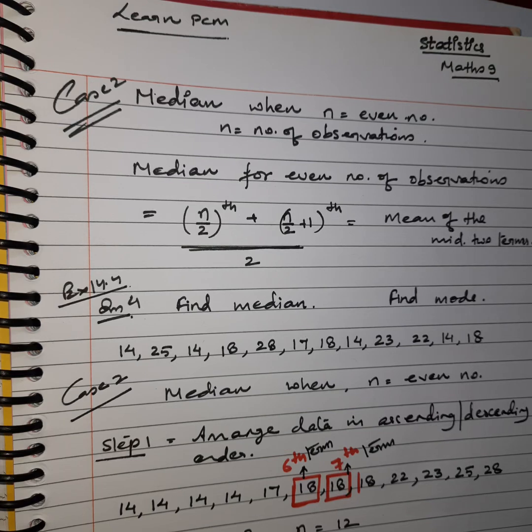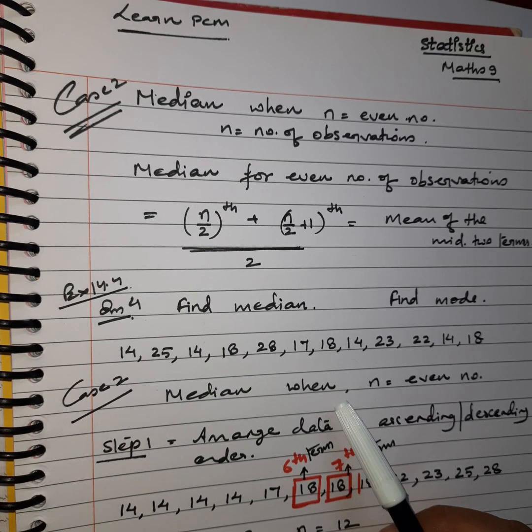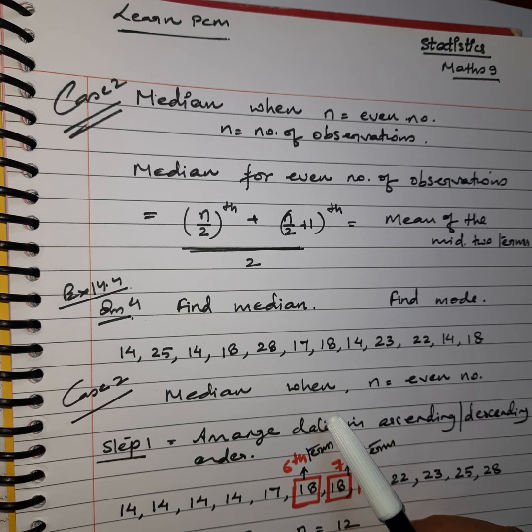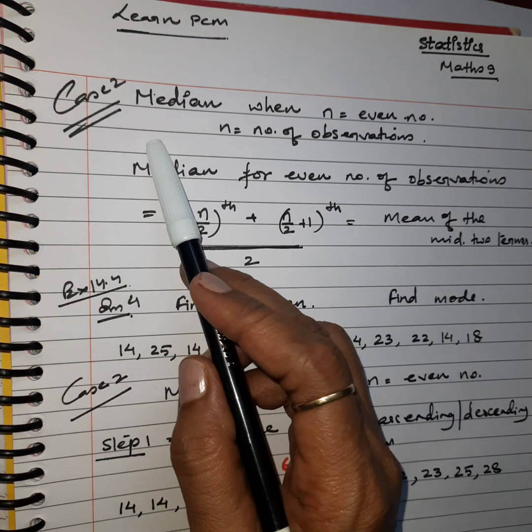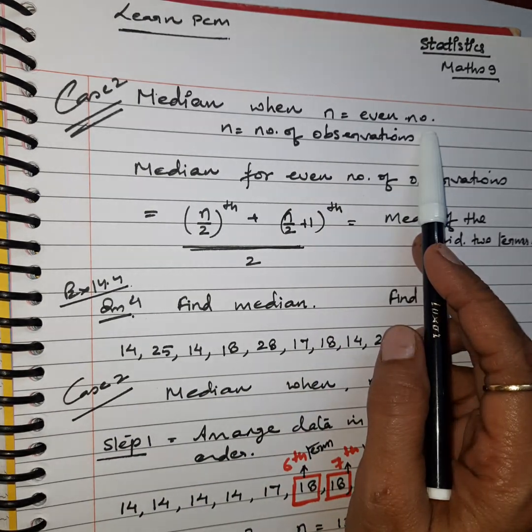Hello and welcome to Learn PCM. We are trying to understand median. We have already done case 1 of finding median where number of observations are odd. Now here we are having case 2 where the number of observations are even.